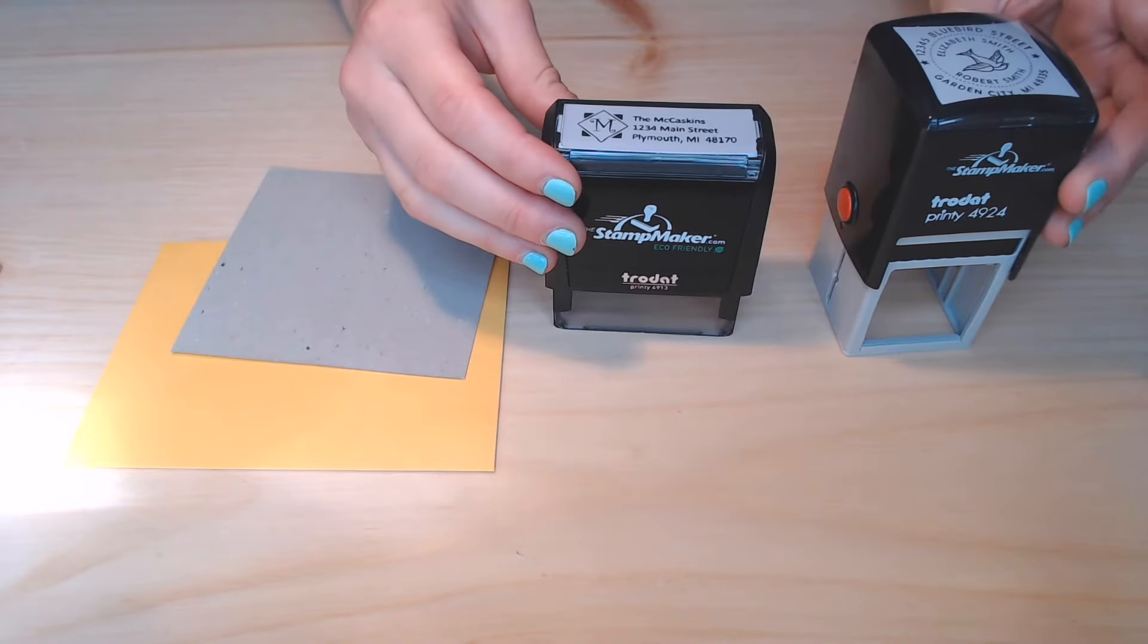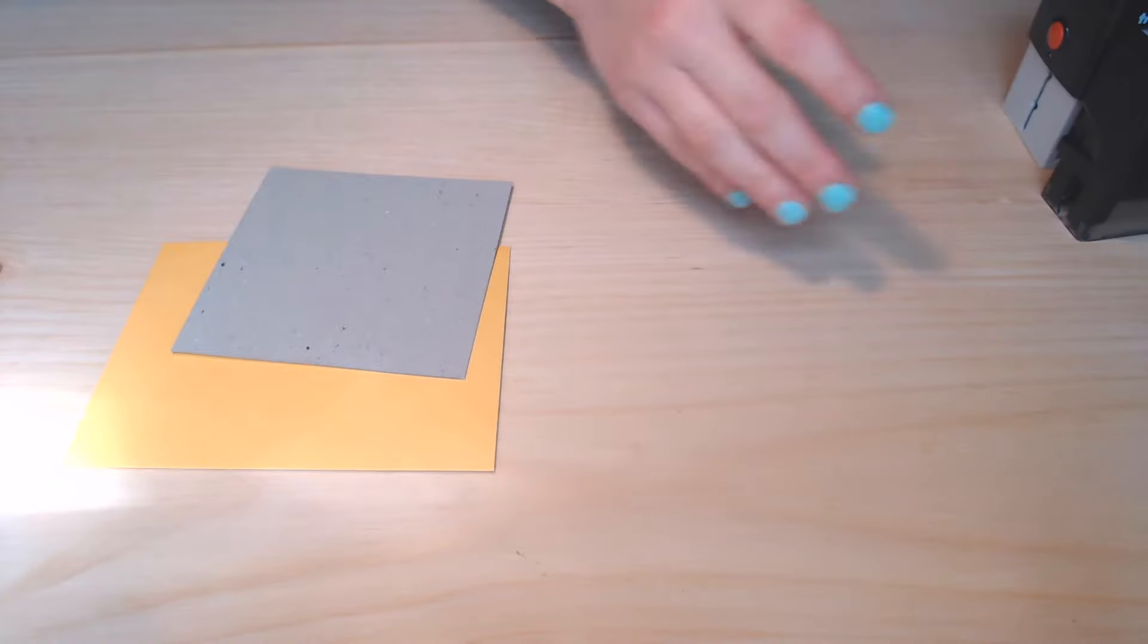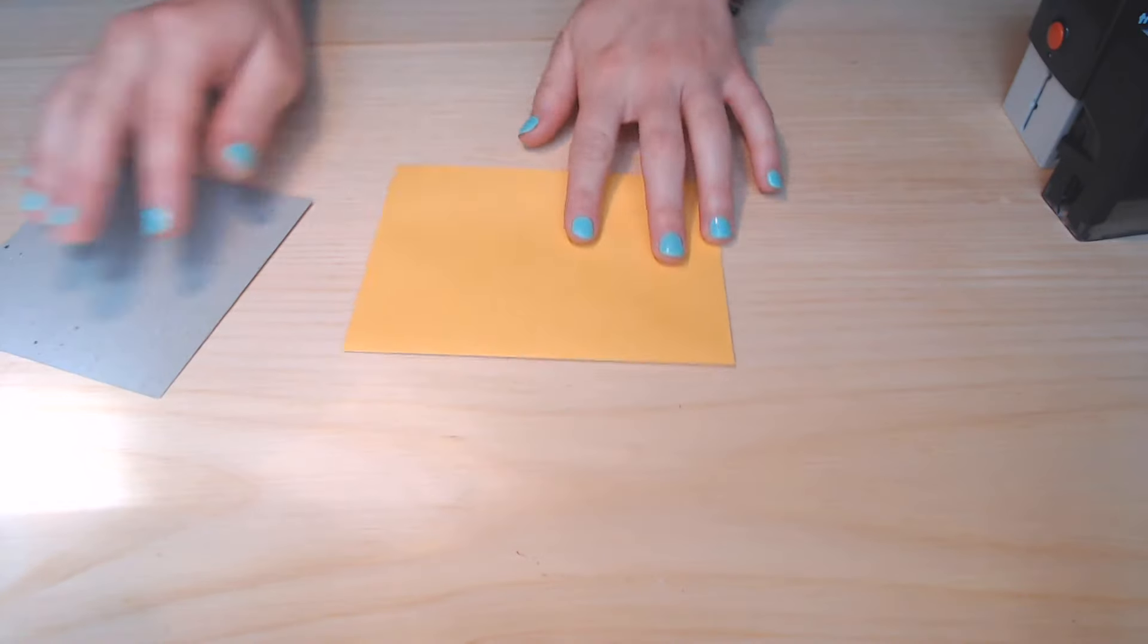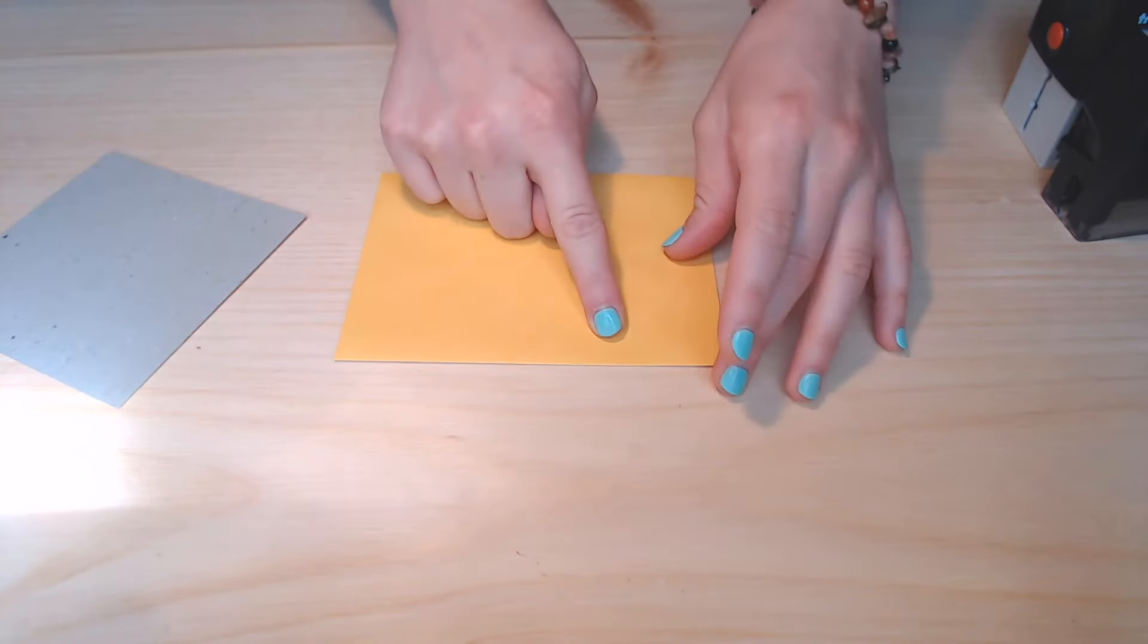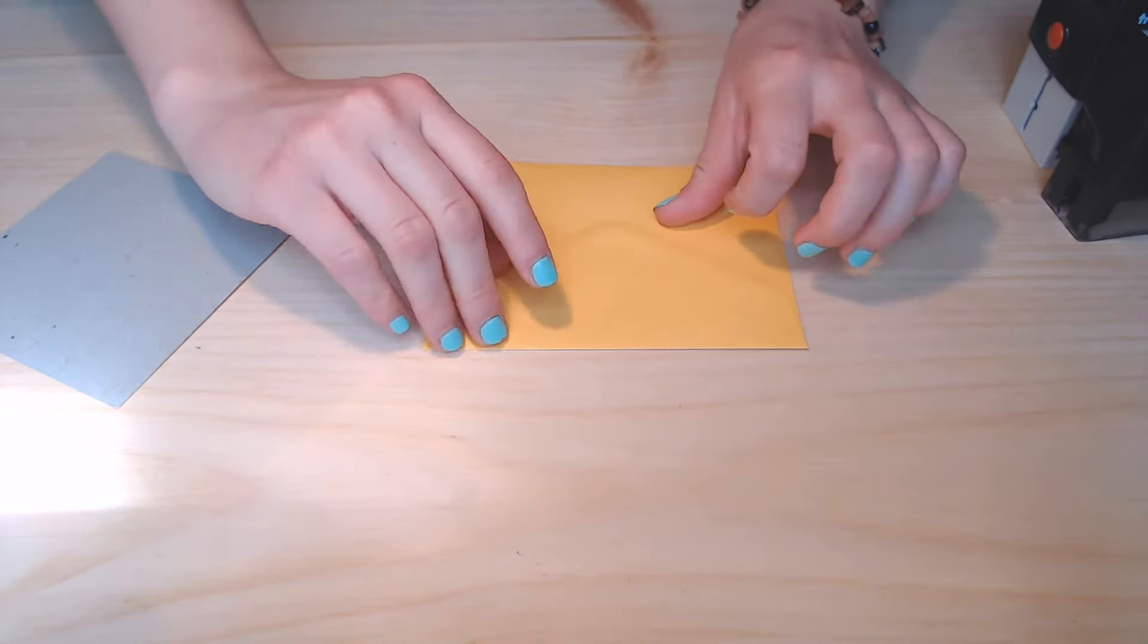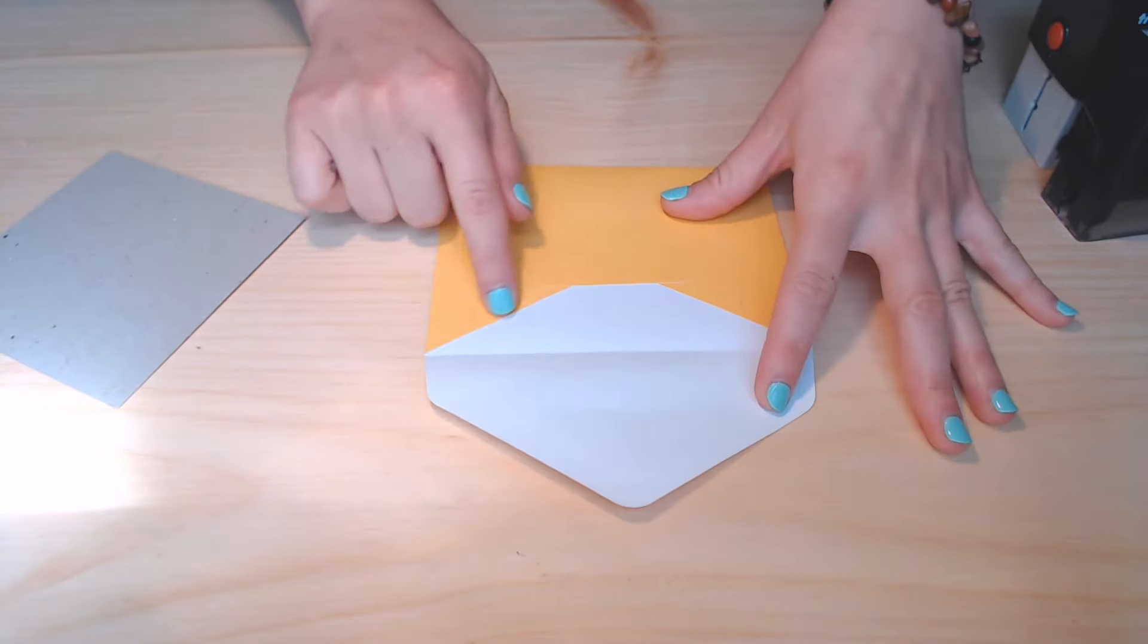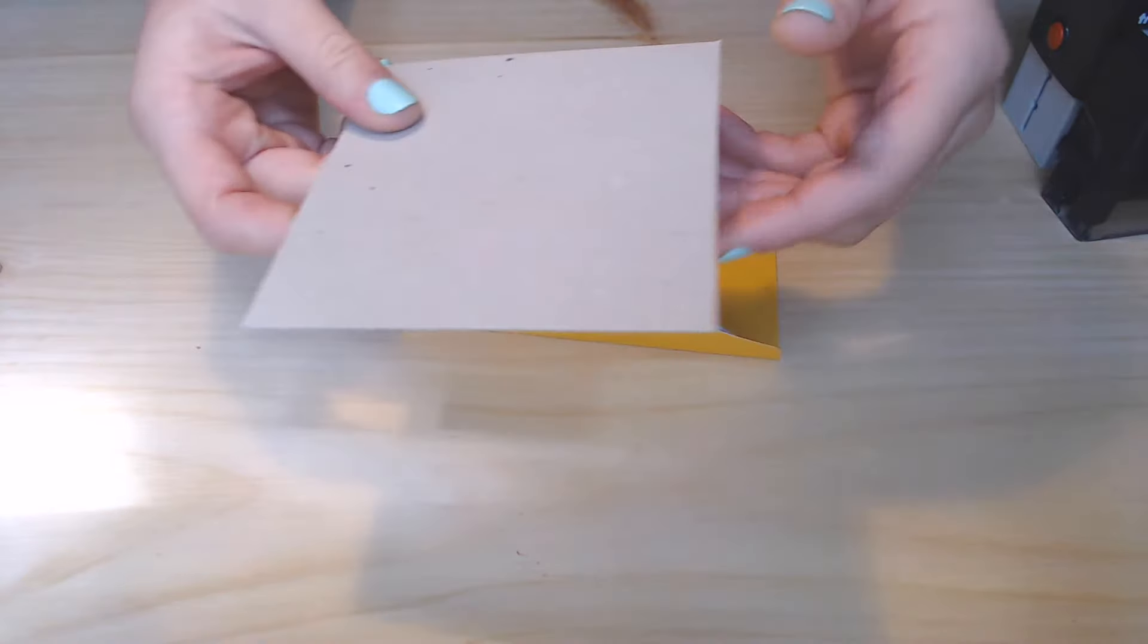For stamping on the front of an envelope, you will need a thick piece of card stock or something similar to stamp on. This is because envelopes have creases on the back side of them and you want to ensure that you are stamping on a flat surface for the cleanest impression possible.